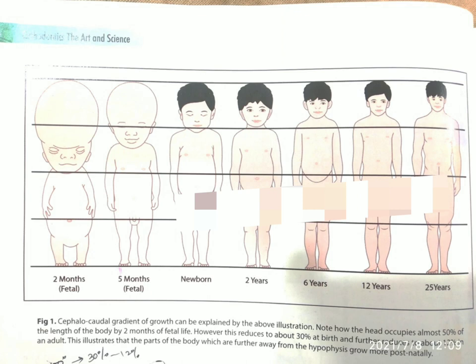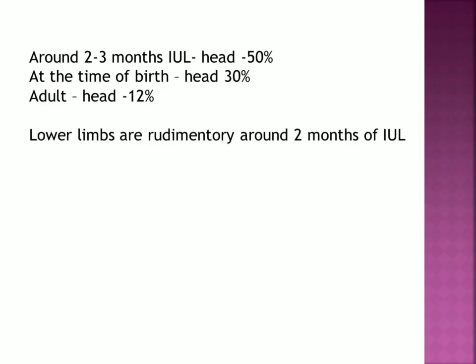This illustrates that the parts of the body which are further away from the hypophysis grow more postnatally. To summarize the key numbers: at two to three months of intrauterine life the head is 50 percent of total body length; at birth it is 30 percent; and in adulthood it is only 12 percent. The lower limbs are rudimentary at around two months of intrauterine life.